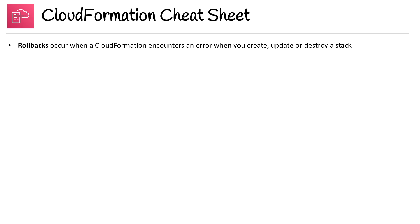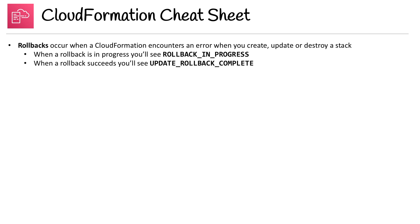On to the last page — rollback. Rollback occurs when CloudFormation encounters an error when you create, update, or destroy a stack. When a rollback is in progress, you'll see 'Rollback In Progress.' When a rollback succeeds, you'll see 'Update Rollback Complete.' When a rollback fails, you'll see 'Update Rollback Failed.'